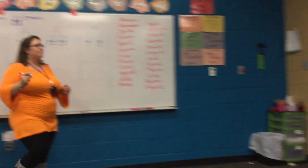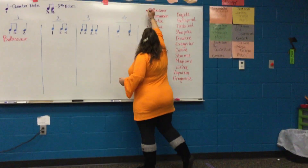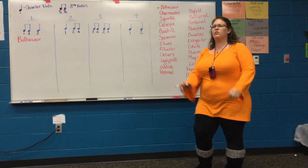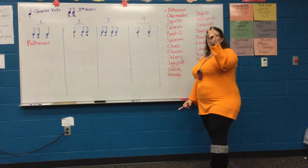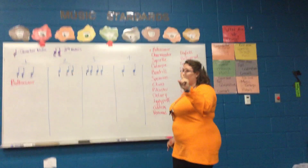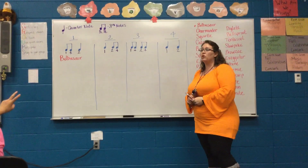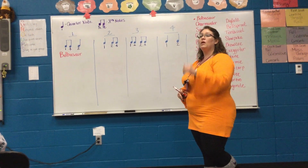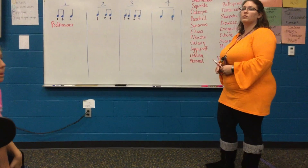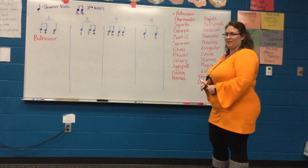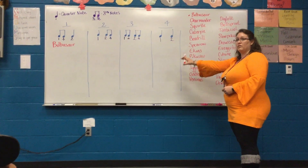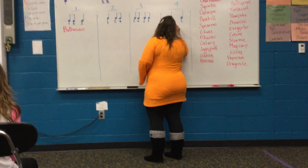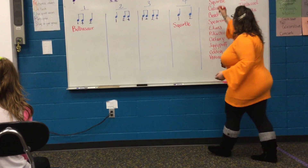Let's do Squirtle. Everybody: Squirtle. How many sounds are in Squirtle? Show me with your fingers. Two sounds. Look up here — which box is Squirtle going to belong in? How do you know? There are two sounds in Squirtle, and box four is the only one with just two sounds, so Squirtle goes in box four.